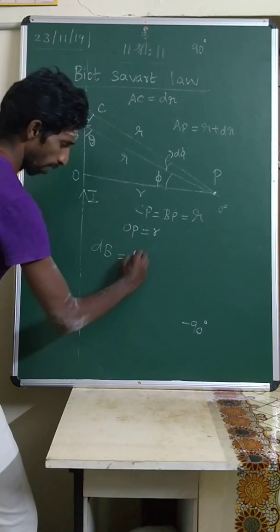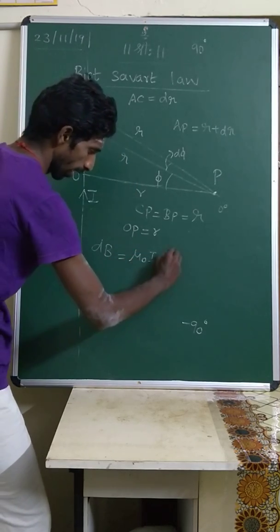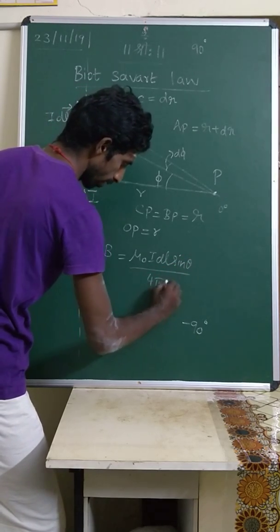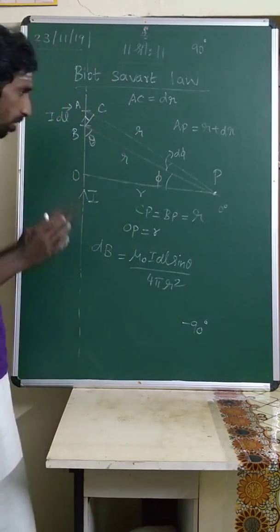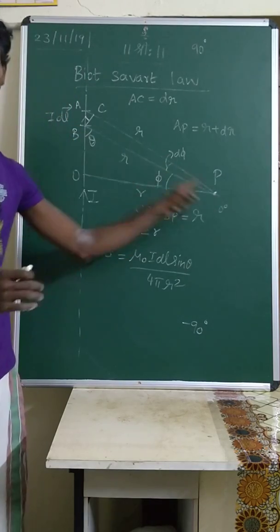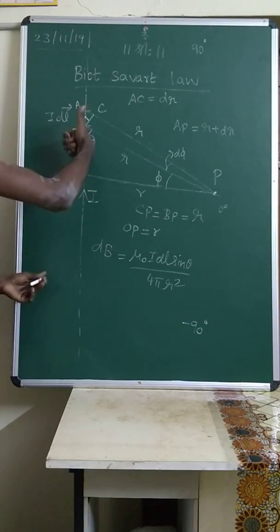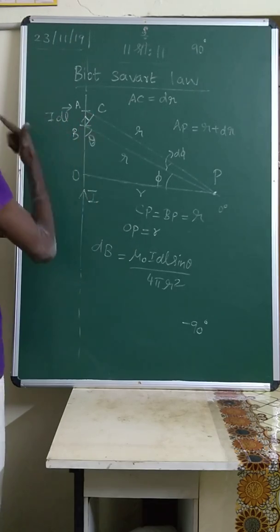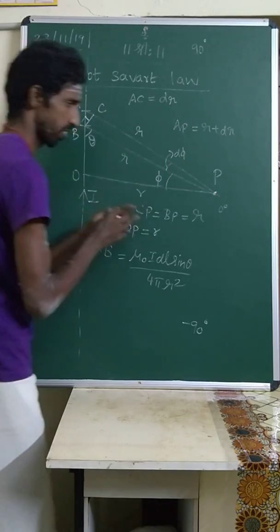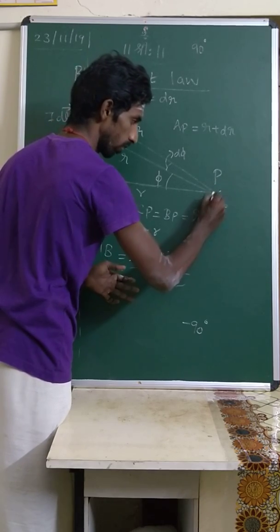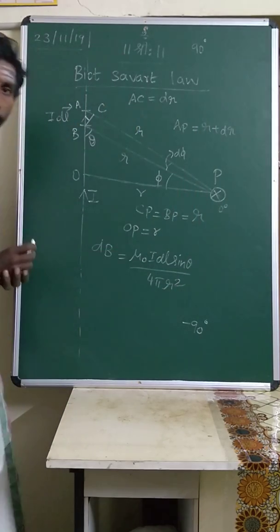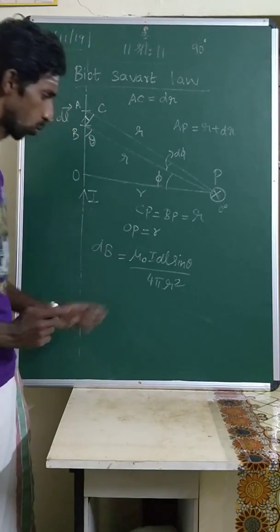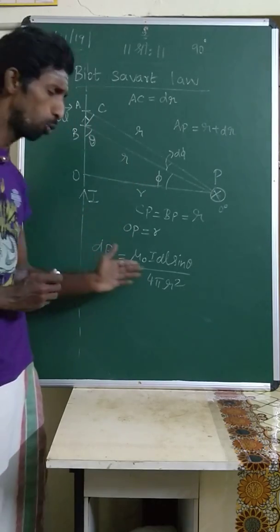The magnetic field due to this small current element, already written in Biot-Savart law, is: dB = μ₀·i·dl·sin θ / (4π·r²). According to the right-hand thumb rule, the direction of current is upwards and the field moves into the page on the right side, indicated by a cross mark.